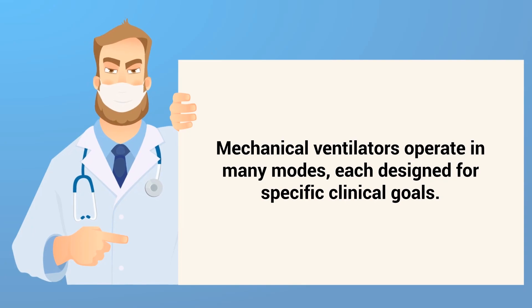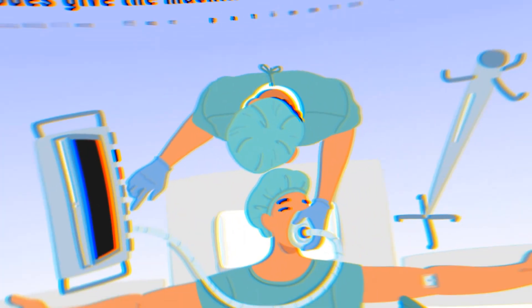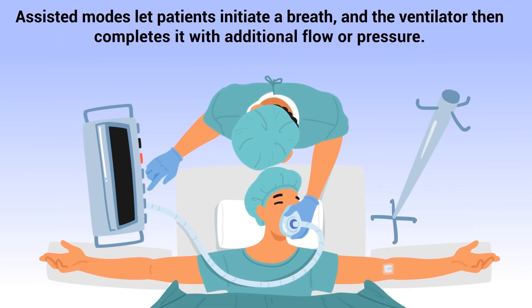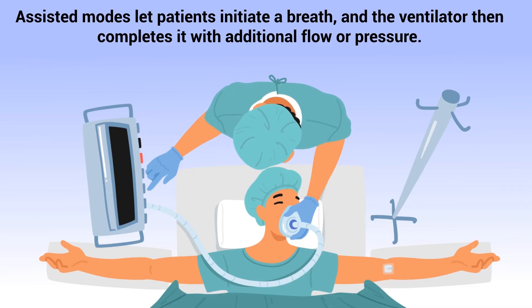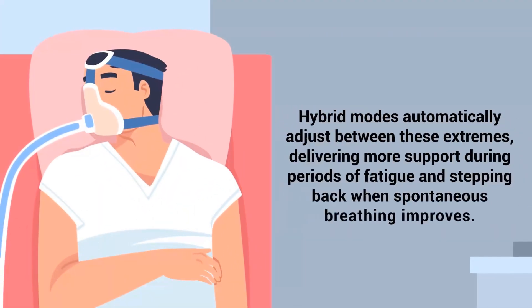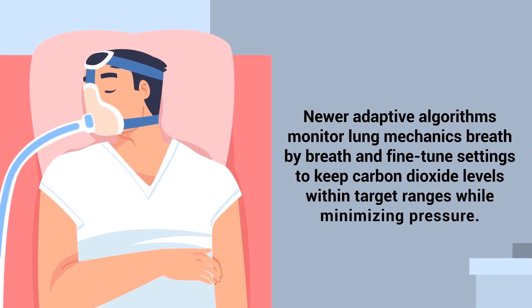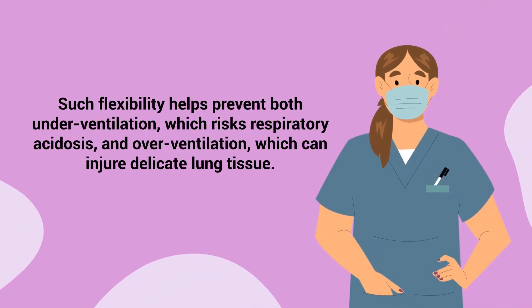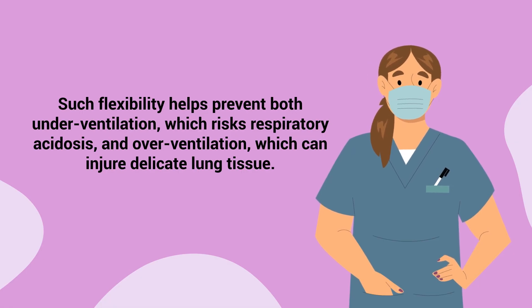Mechanical ventilators operate in many modes, each designed for specific clinical goals. Controlled modes give the machine full authority over the timing and size of breaths, suitable for patients who are deeply sedated or paralyzed. Assisted modes let patients initiate a breath, and the ventilator then completes it with additional flow or pressure. Hybrid modes automatically adjust between these extremes, delivering more support during periods of fatigue and stepping back when spontaneous breathing improves. Newer adaptive algorithms monitor lung mechanics breath-by-breath, fine-tuning settings to keep carbon dioxide levels within target ranges while minimizing pressure, helping prevent both underventilation and overventilation.